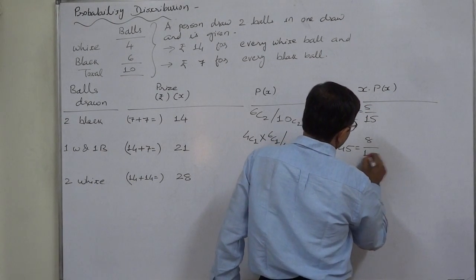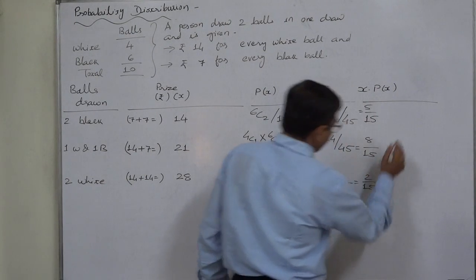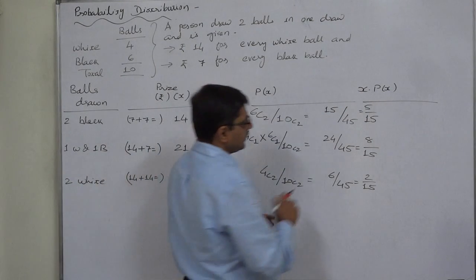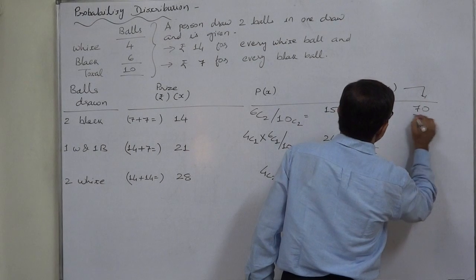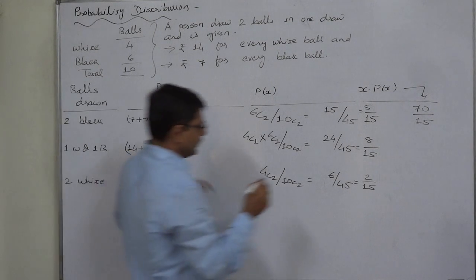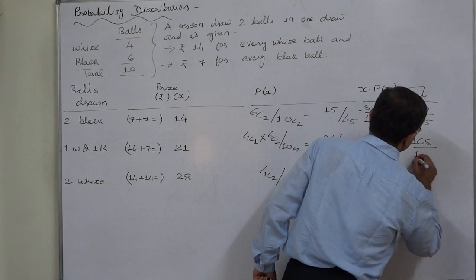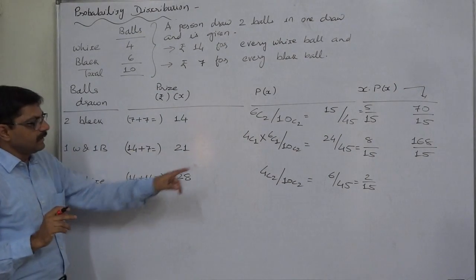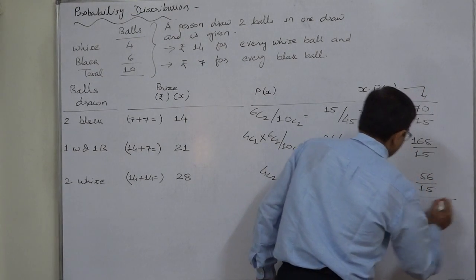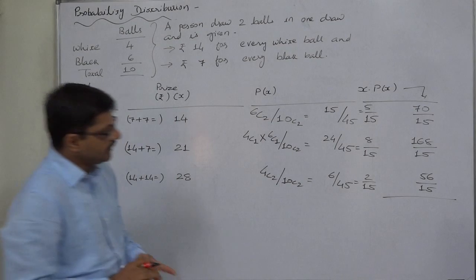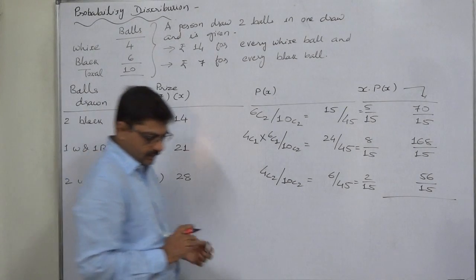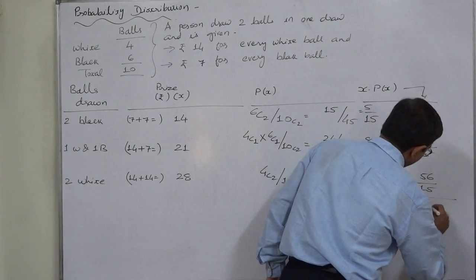14 multiplied by 5 by 15, that is 70 by 15. 21 multiplied by 8 by 15, it comes to 168 by 15. And 28 multiplied by 2 by 15, 56 by 15. Its summation will be 70 plus 168, 238 plus 6, 244 plus 50, 294 by 15.